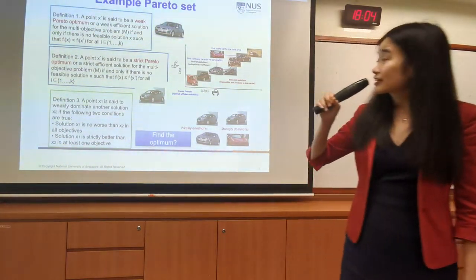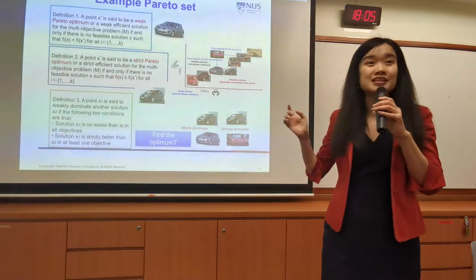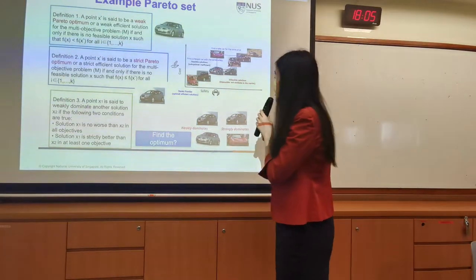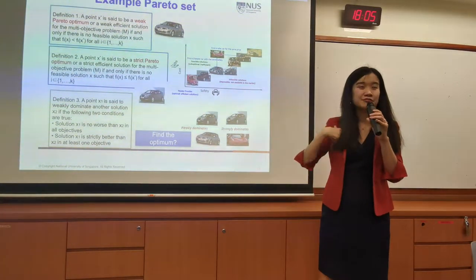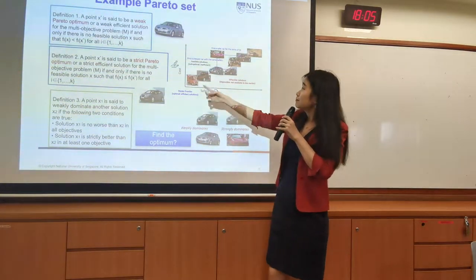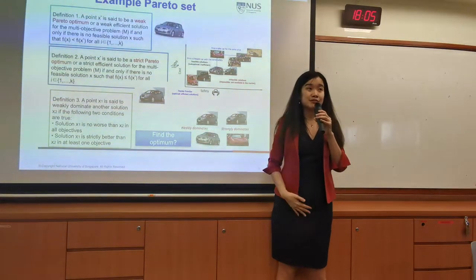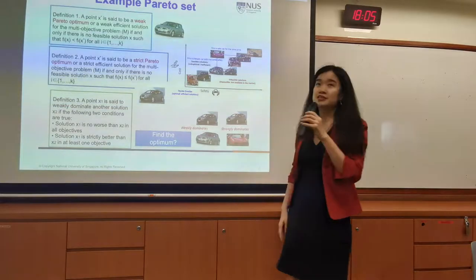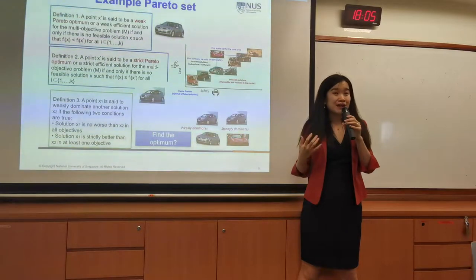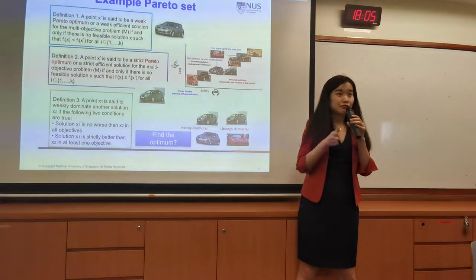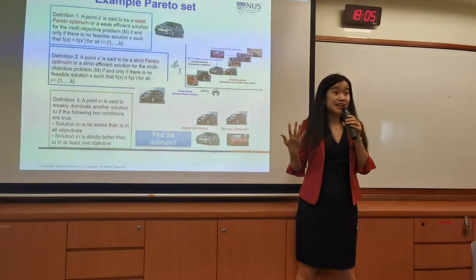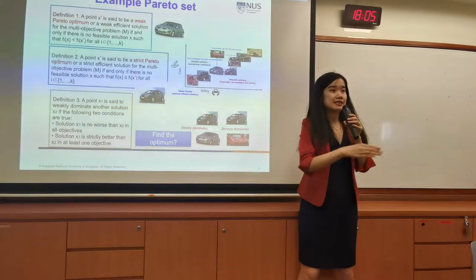We had some questions about the solutions of multi-objective optimization last week. Some students had concerns about what is really a Pareto curve. We use the boundary of feasible and infeasible solutions to define a series of options. Along these options, they are all results of MOO — one might be better than another in one dimension but worse in another.